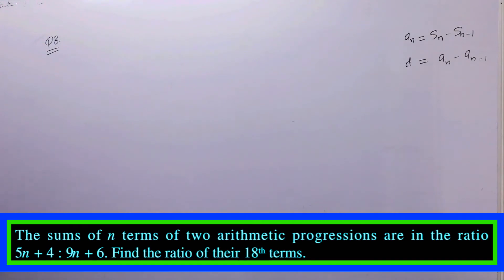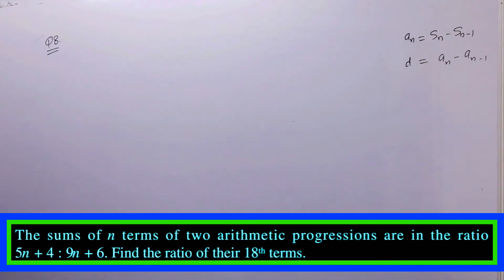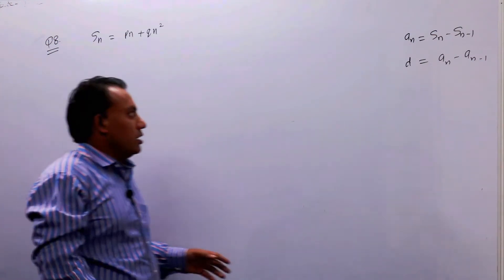Question number 8: if the sum of n terms of an AP is Pn plus Qn squared, where P and Q are constants, find the common difference.